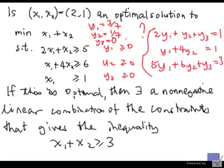So as you can see, all three values are non-negative. That means such a linear combination of these constraints exists to give us the inequality with the objective function on the left-hand side and the optimal value on the right-hand side.